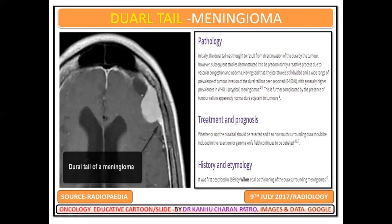Having said that, the literature is still divided, with a wide range of prevalence of tumor invasion of the dural tail reported — up to 100% — with generally higher prevalence in WHO grade 2 meningiomas. This is further complicated by the presence of tumor cells in apparently normal dura adjacent to the tumor. Whether or not the dural tail should be resected continues to be debated. The dural tail was first described in 1918 by Williams et al.